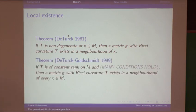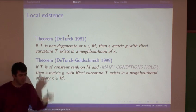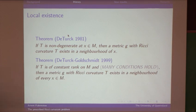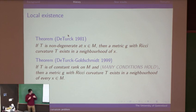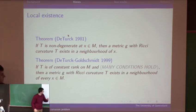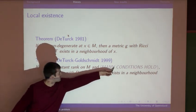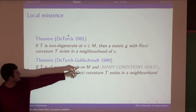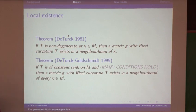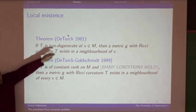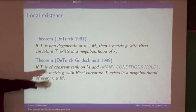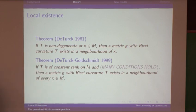This non-degeneracy assumption is essential — there are degenerate tensors which are not the Ricci curvature of anything, not even locally. There's also a theorem by Duterk and Goldschmidt from 1999, which concerns tensors of constant rank: if your tensor T has the same rank at every point and several more technical conditions are satisfied, then you can solve the prescribed Ricci problem locally in a neighborhood of every point. In the non-degenerate case, we understand the problem well; in the degenerate case, the situation is substantially more complicated.